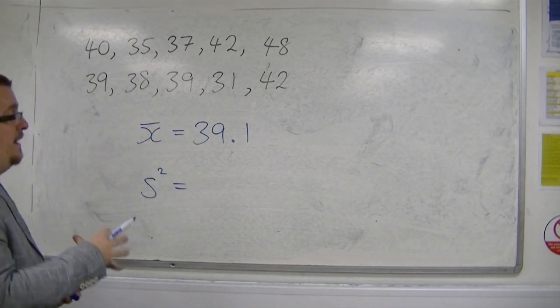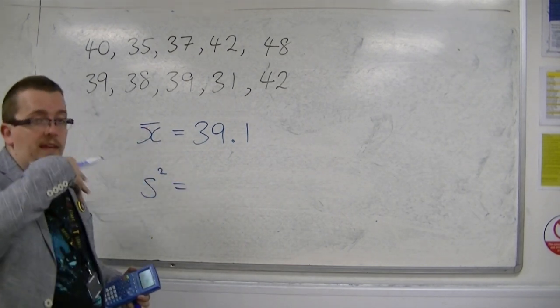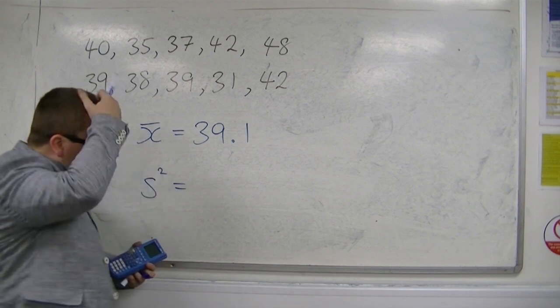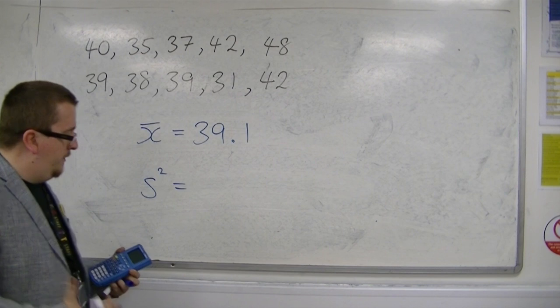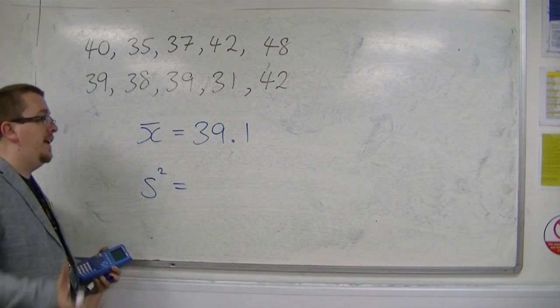But it also gives you Sx, which is the standard deviation where we're dividing through by n minus 1 instead. So it's an unbiased estimator for the standard deviation.